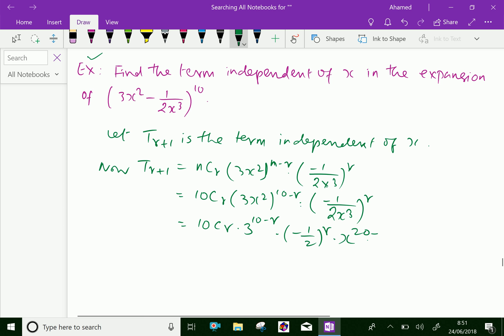Now, here x is minus 2r from the first term, here x is minus 3r from the second term, totally x is raised to (20 - 5r).